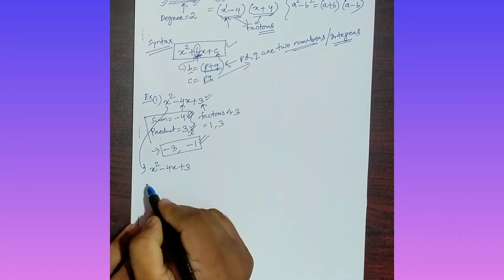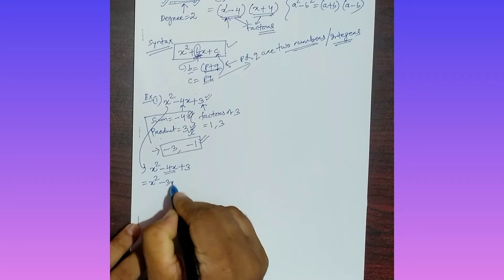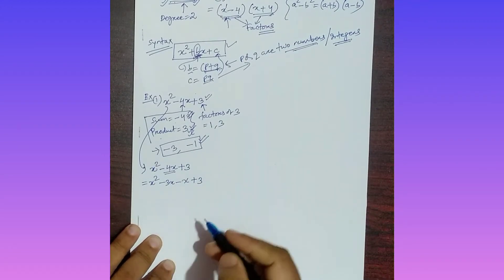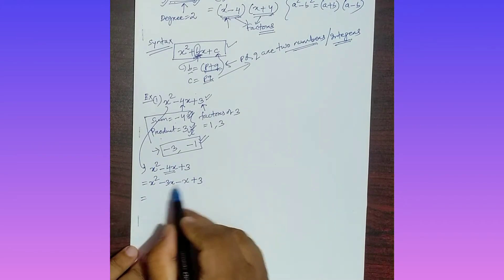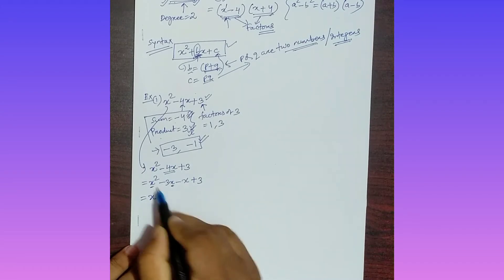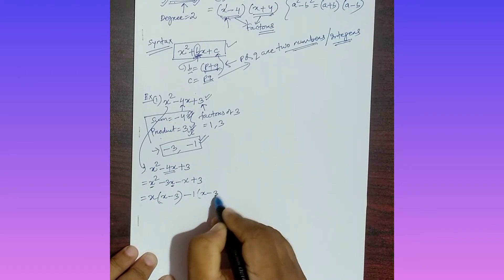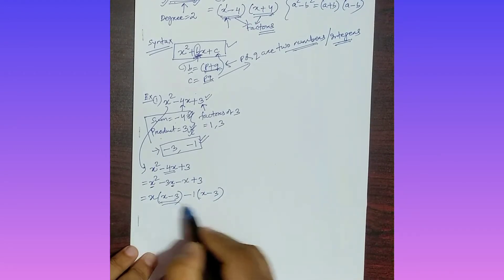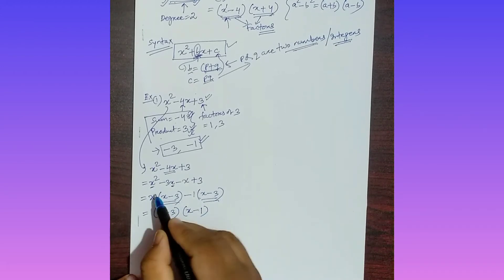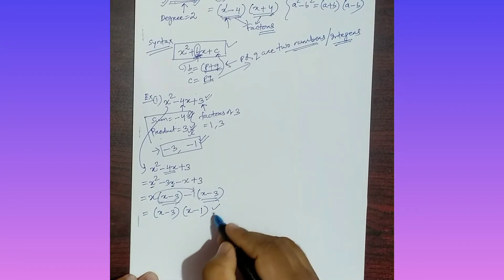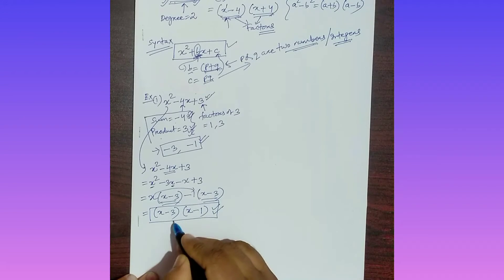Now I will write: x² - 4x + 3. I split the middle term as -3x and -x, giving x² - 3x - x + 3. Taking x common from the first two terms: x(x - 3). Taking -1 common from the last two terms: -1(x - 3). Now (x - 3) is a common factor, so the answer is (x - 3)(x - 1).